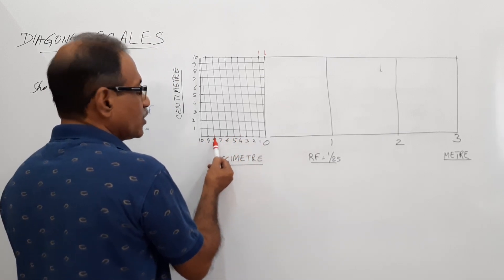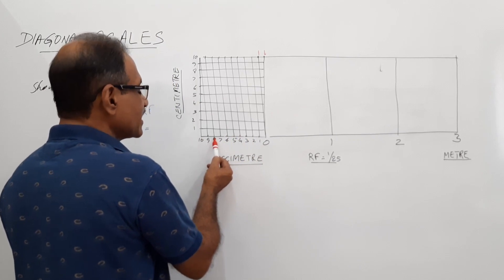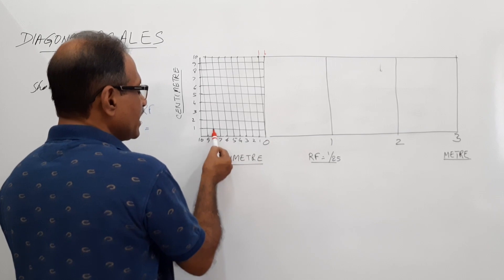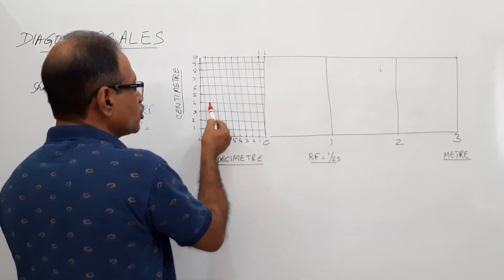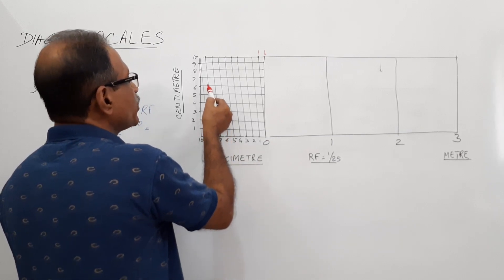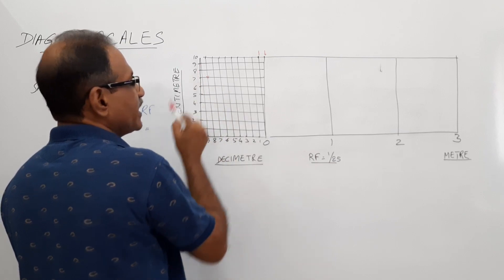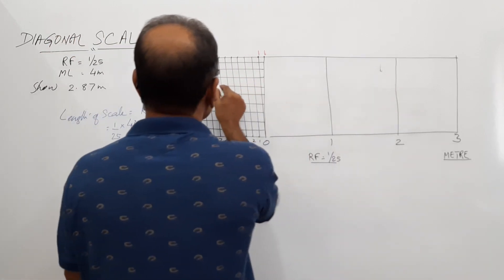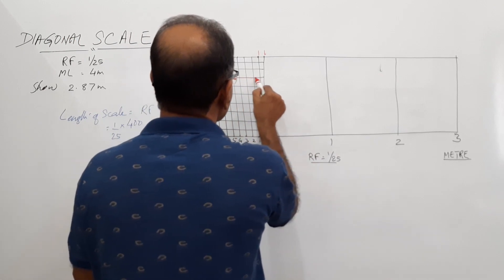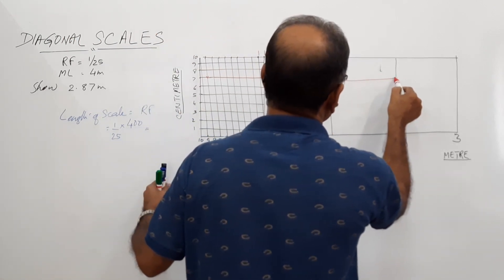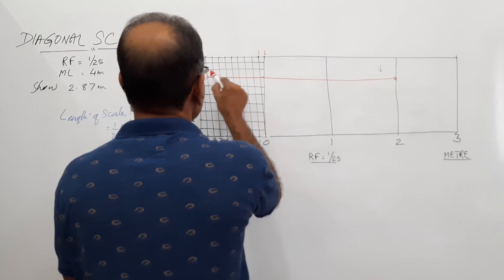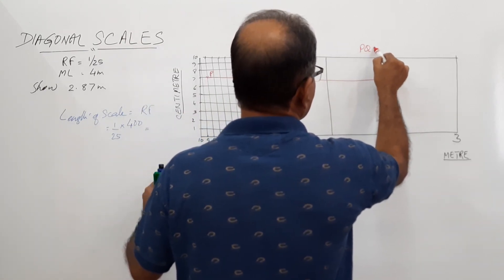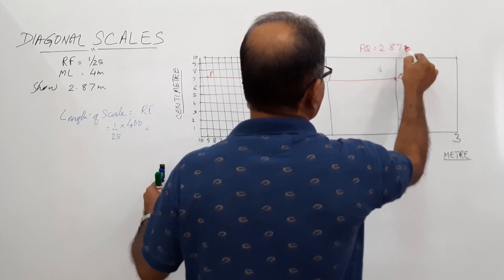Through the inclined line at 8 — that is at 2.8 — you go up: 2.81, 2.82, 2.83, 2.84, 2.85, 2.86, 2.87. Mark a point there at 2.87. Draw a horizontal line. You can write P on the left and Q on the right. PQ equals 2.87 meters. That is one way of marking the dimension.